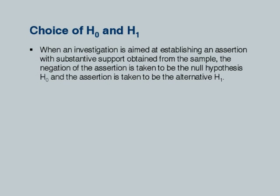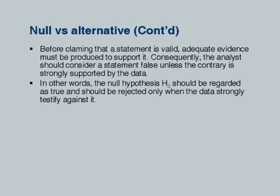That is where type 1 and type 2 errors come in. The null hypothesis is called H-naught and the alternative hypothesis is called H1. When an investigation aims at establishing an assertion with substantive support from the sample, the negation of that assertion is taken as the null hypothesis and the assertion is taken as the alternative. When you want to make a new claim, that is put as the alternative; status quo is often the null hypothesis. Before claiming a statement is valid, adequate evidence must be produced. The null hypothesis should be regarded as true and rejected only when the data strongly testify against it.